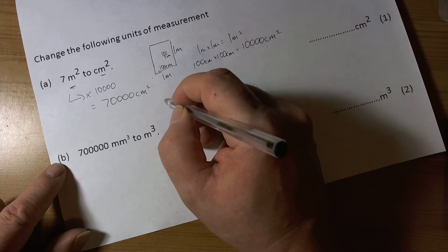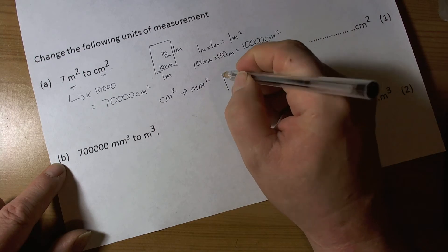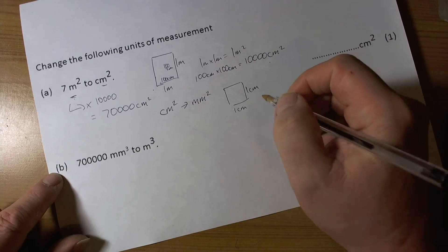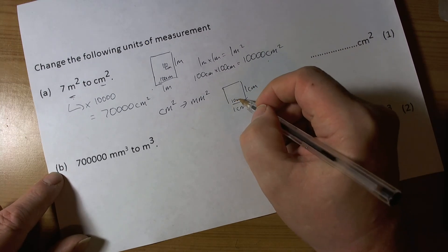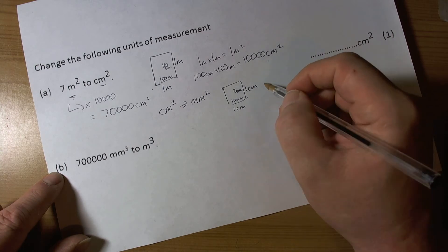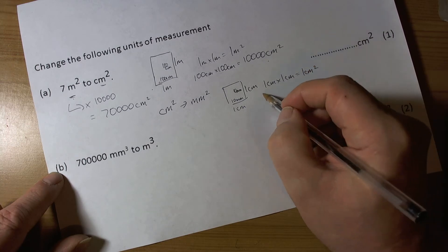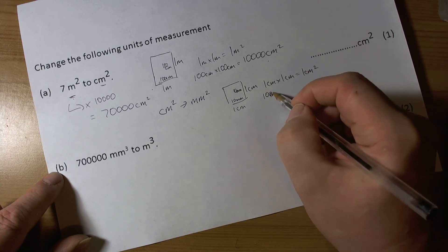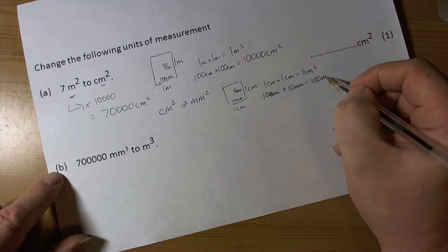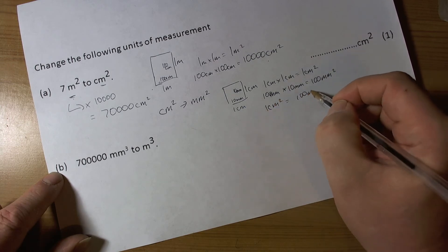If we had to do square centimetres to square millimetres, then again we can start with the unit square — one centimetre by one centimetre — and then change it into the other units: 10 millimetres and 10 millimetres. One square centimetre would be one centimetre times one centimetre, and in millimetres equivalent it would be 10 millimetres by 10 millimetres, so 100 square millimetres. One square centimetre is the same as 100 square millimetres.